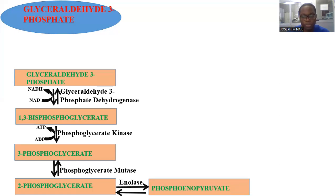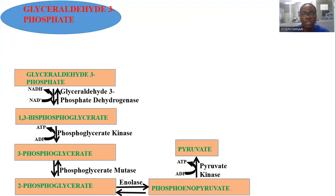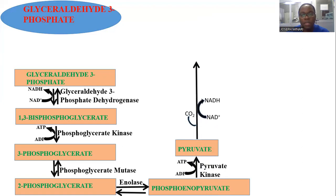2-phosphoglycerate, in the presence of enolase, is converted to phosphoenolpyruvate. Phosphoenolpyruvate, in the presence of pyruvate kinase, with ATP also being produced, is converted to pyruvate. When you get to pyruvate, there are two possible outcomes depending on the presence or absence of oxygen. If oxygen is present, CO2 comes out, NAD+ goes in, NADH comes out, and the enzyme pyruvate dehydrogenase complex facilitates the conversion.